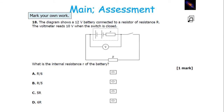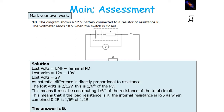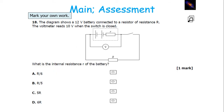To find the internal resistance of the battery: it has a 12V EMF and 10V terminal potential difference, indicating the lost volts are 2 volts. As potential difference is directly proportional to resistance, the lost volts are 2 twelfths, or 1 sixth, of the overall EMF. So the internal resistance must be contributing 1 sixth of the resistance of the total circuit. If the load resistance is R, the internal resistance must be R over 5, because R over 5 combined with R gives 1.2R, and 0.2R over 1.2R is 1 sixth. Be careful not to assume R over 6, as it's 1 sixth of the total, not just of the load.